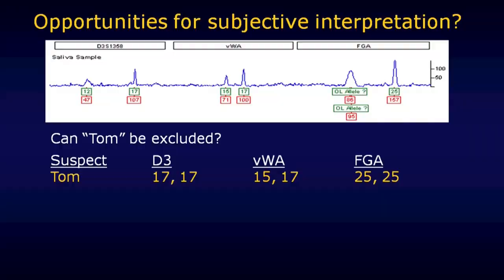They took cotton swabs and swabbed her breast, and used that to generate a DNA profile. You'll notice there is only a blue electropherogram — nothing in green or yellow, as you might typically expect. That's because for this particular case, that's all they were able to get useful information from. The electropherograms for the green and yellow lines were essentially flat lines. None of the peaks on this electropherogram correspond to alleles that the victim herself had, so it seems we're looking at DNA that was foreign to the potential victim.